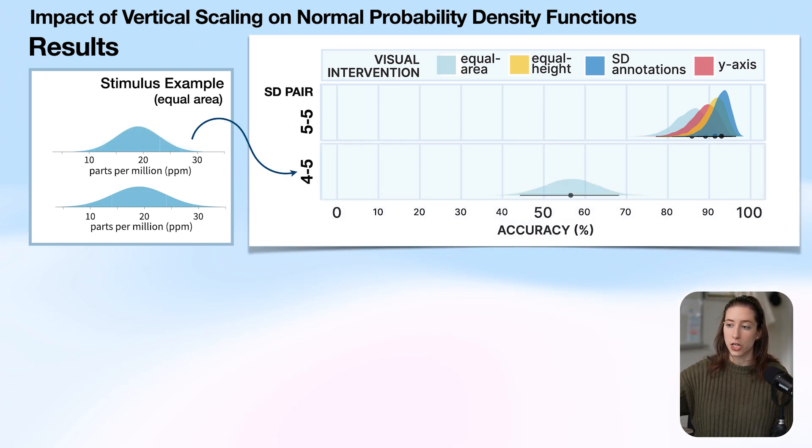But when we start changing the standard deviations of the two compared PDFs, we find that accuracy drops a lot. So this first PDF I'm showing you is for our equal area stimulus example, which you can see over here on the left, and accuracy is down by 50 to 70%. And when we scale everything to equal height, accuracy drops a ton down to the 10 to 30% range.